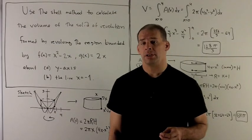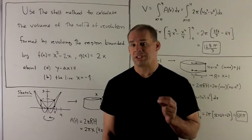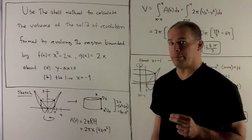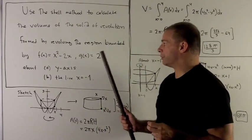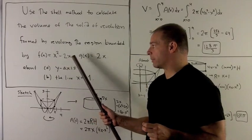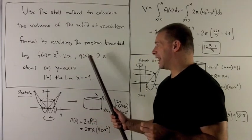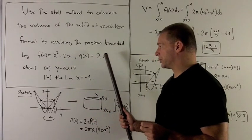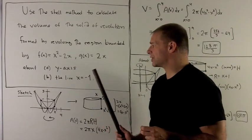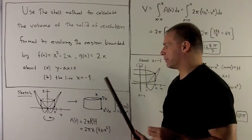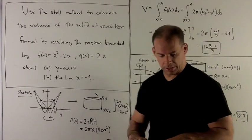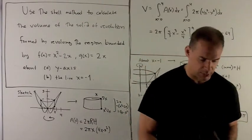I'm going to use the shell method to compute the volume of the solid of revolution given by revolving the region bounded by f(x) = x² - 2x and the line g(x) = 2x about the y-axis and the line x = -2. So first, I want to sketch my region.